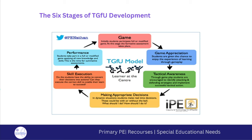What are the six stages of teaching games for understanding? Teaching games for understanding follows a structured progression through six key development stages: game, game appreciation, tactical awareness, appropriate decisions, skill execution, and performance. In the initial stages, learners learn about the fundamental concepts and rules of the game. They gradually progress to understand strategies, tactical awareness, and skill execution, and finally use their knowledge and talents to enhance their overall performance. These stages create a solid foundation for learners to become proficient and well-rounded sports players.